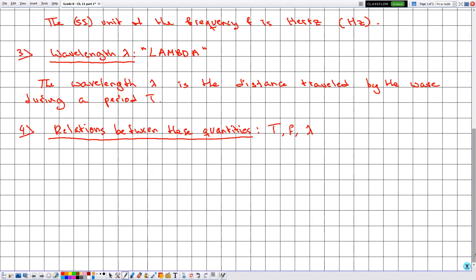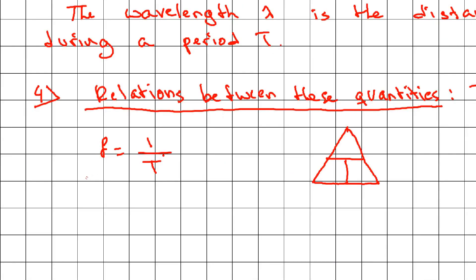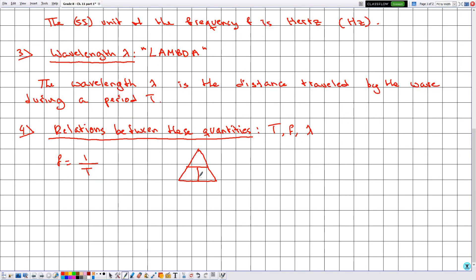The first relation is that the frequency and the period are related by: f equals one over T. For any formula in physics we can construct a triangle. Here, because we have division, f goes at the bottom, 1 at the top, and T at the bottom. The unit of the period is seconds and the unit of the frequency is hertz.